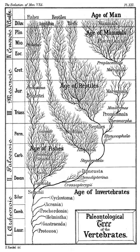Modern paleontology began with the work of Georges Cuvier, 1769–1832. Cuvier noted that in sedimentary rock, each layer contained a specific group of fossils. The deeper layers, which he proposed to be older, contained simpler life forms. He noted that the many forms of life from the past are no longer present today.